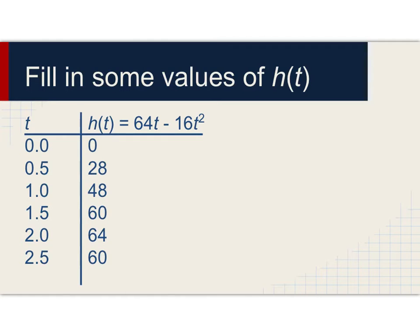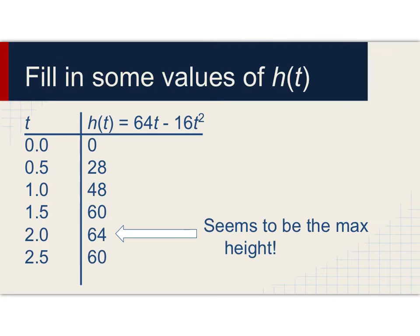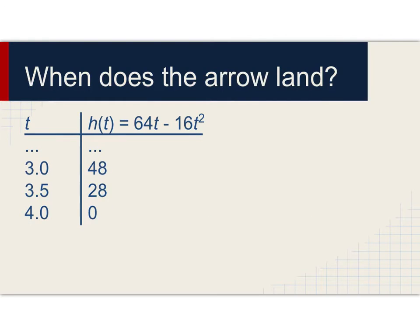Let's think about this logically. Once the arrow starts to fall back down to the ground, it's not going to lift back up. Let's fill in the table with remaining values to see when the arrow comes back down to a height of zero. At three seconds, 48 feet. Three and a half seconds, 28 feet. At four seconds, we have a height of zero. So we can answer one of the questions right now: the arrow returns to ground level after four seconds.